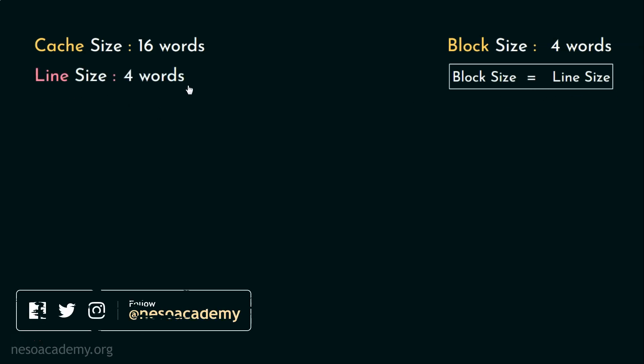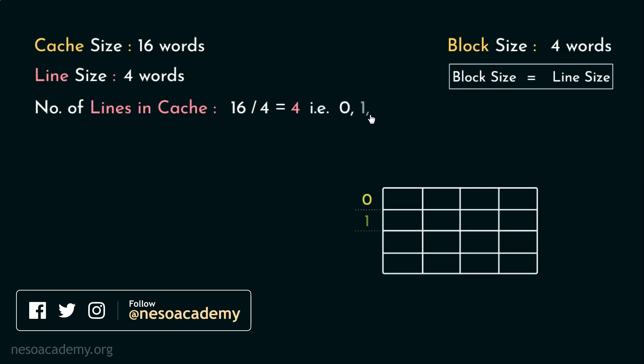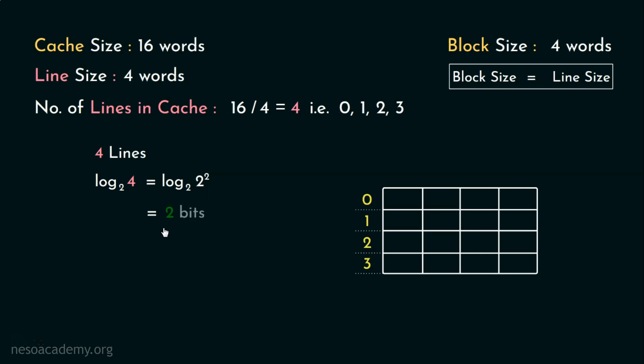Now let's assume we have a cache of 16 words and the block size was already given to us as 4 words. We already know both the block and the line are equal in sizes. In that case, line size is also going to be 4 words. Therefore, number of lines in the cache is 16 by 4, that is 4, which is 0, 1, 2 and 3. And in order to identify 4 different lines, we will be needing log 4 base 2, that is log 2 square base 2, which is 2 bits.